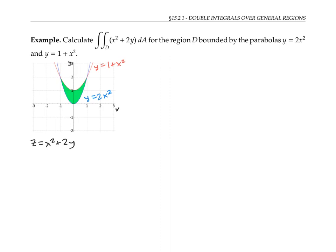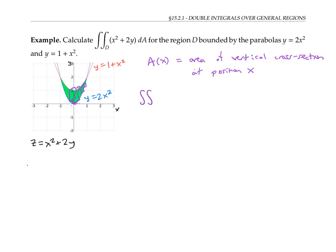Let's imagine slicing this volume with planes perpendicular to the yz plane. That gives us vertical cross sections corresponding to different values of x along the x axis. I can write A of x to represent the area of the vertical cross section at position x. The total volume or double integral can be written as the integral of these cross sectional areas with respect to x, from x equals the minimum x value, which looks like negative one, to the maximum x value, which looks like one.